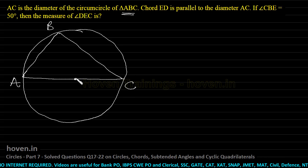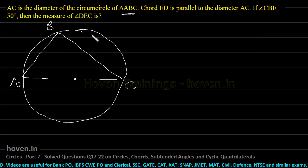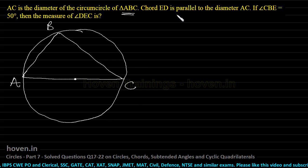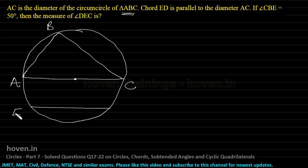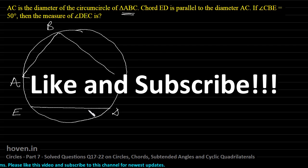This circle is the circumcircle of triangle ABC. A, C, and B, all three vertices, lie on this circle. Next, chord ED is parallel to the diameter AC. We could draw it either way. ED is parallel to the diameter AC. These two lines are parallel to each other.